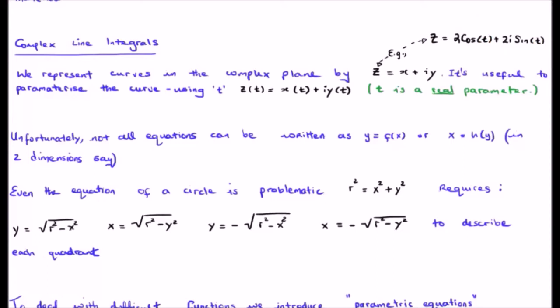Unfortunately not all equations can be written very easily or very usefully as a function y of x or x a function of y in two dimensions. For example, let's take probably the most simple equation you'll see in your studies, the equation of a circle. R squared is x squared plus y squared.